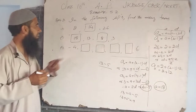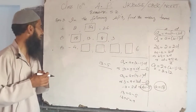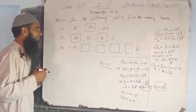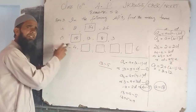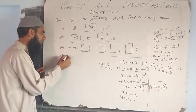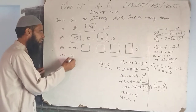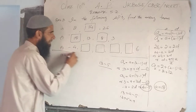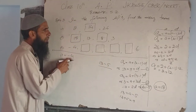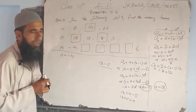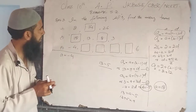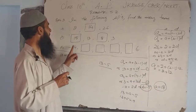Now we have the last part of this, that is the third part. We have first term A is equal to minus 4. We do not have the value of D, that is common difference. But we have the first, second, third,